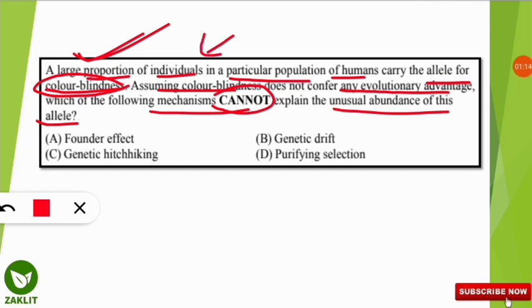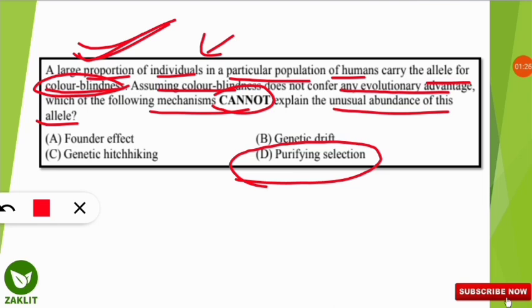The correct option is D — purifying selection cannot be the reason for this large population having the recessive allele for color blindness. However, the other three — founder effect, genetic drift, and genetic hitchhiking — can all be possible reasons for this effect in that population. These three are very important concepts in evolution.